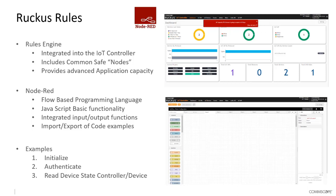It includes a whole range of what we call nodes — function blocks that can be dragged and dropped into the environment to take specific functions or capabilities and integrate them within the flow you're developing. It provides advanced capability within the IoT controller for complex programming, including the ability to develop dashboards or user interfaces, all integrated within the rules engine.